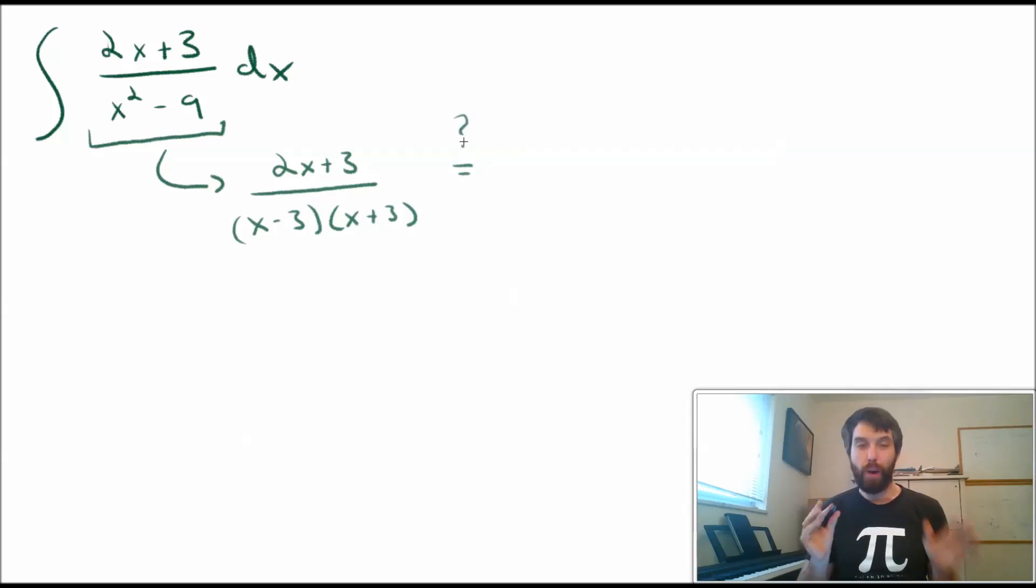And then, the method of partial fractions asks us to see whether or not I can write this as a divided by x minus 3 plus b divided by x plus 3. And depending on what occurs in your denominator here, you might have different guesses on the right-hand side. But after we do this, it's a bunch of algebra to determine what the constants are and then we should be able to integrate.